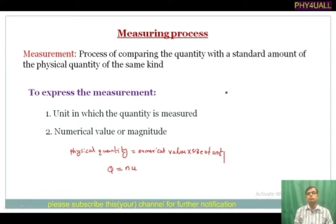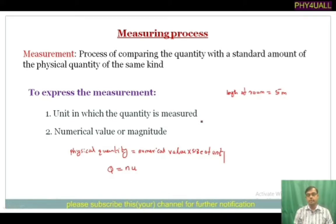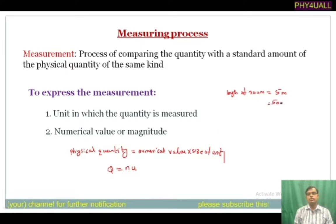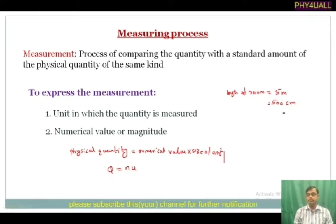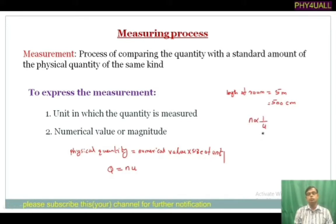Just an example: to measure the length of the room, maybe it is 5 meters. Here 5 is the numerical value N, and meter is the unit U. The same length can be represented as 500 centimeters. The length of the room is the same but the unit is different. Centimeter is a smaller unit, so the magnitude becomes higher. Meter is a larger unit, so the magnitude is less. Therefore, N is inversely proportional to U — if the unit size is more, then the numerical value will be less, and vice versa.